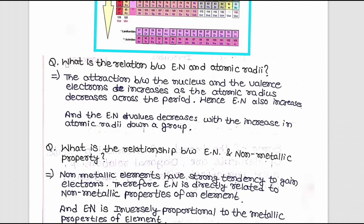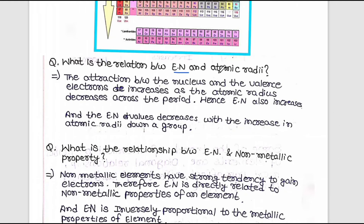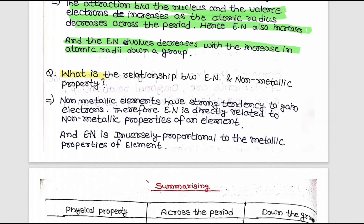What is the relation between electronegativity (EN) and atomic radius? As atomic radius decreases along the period, the attraction between nucleus and valence electrons increases, so EN also increases. EN decreases with increasing atomic radius down a group. Regarding the relationship between EN and nonmetallic property: nonmetallic elements have a strong tendency to gain electrons, so electronegativity is directly proportional to the nonmetallic property of an element.